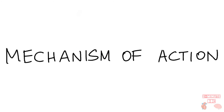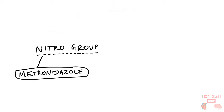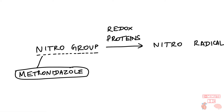First, let's see the mechanism of action. Metronidazole first enters the organisms through diffusion, and then the nitro group of metronidazole is converted into a highly reactive nitro radical with the help of redox proteins, which are present only in anaerobes. That is why metronidazole is active mainly against anaerobic organisms.